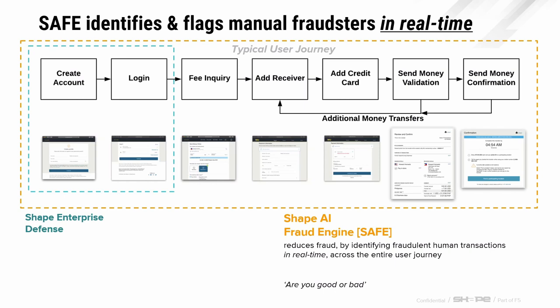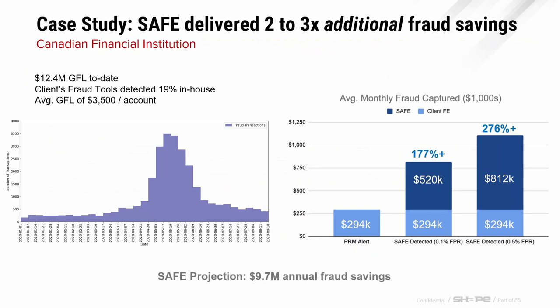We've produced an evolution called SAFE — the Shape AI Fraud Engine. It's a simple piece of JavaScript deployed on every single page within the application, on web or mobile. It paints a picture of what a good user looks like versus a bad one. Along each transaction, you get a real-time indicator as to whether that transaction should be flagged, challenged, or outright denied, delivered as a real-time encrypted cookie or HTTP header that your application acts on to call, for example, a third-party API step-up authentication through Okta.